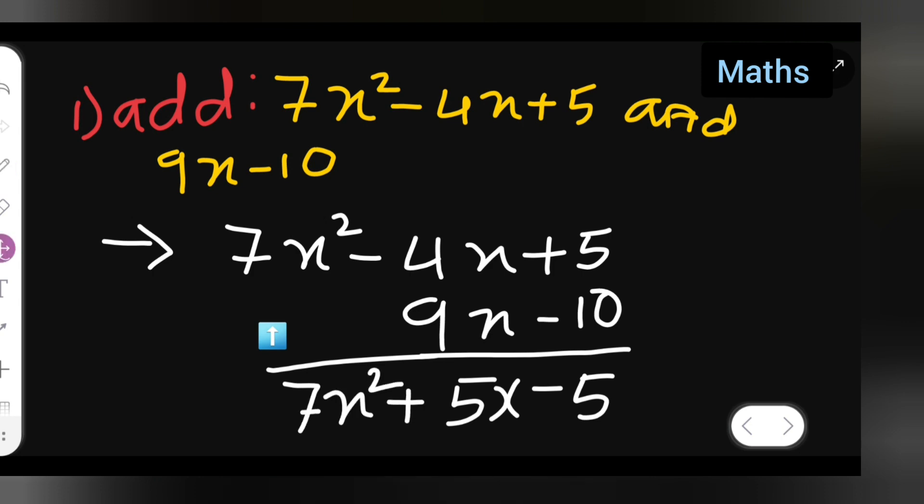Plus 5x. So basically, this is your answer: 7x² + 5x - 5. This is the way you'll have to add these two expressions. I hope you all have understood. Thanks for watching.